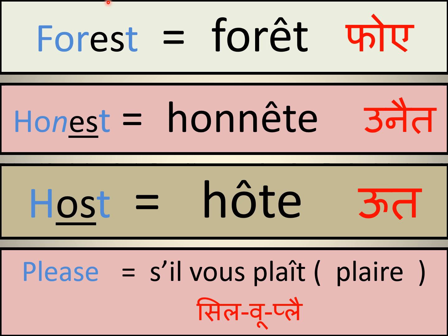The word 'forest' in English is written 'forêt' in French. Let's see why. There was an E followed by S — I told you the S will be deleted and a circumflex will come on top of the vowel. So the S is missing and there is a circumflex on the e, making the word 'forêt.' The P is silent, as I mentioned, so we read it as 'forêt.'